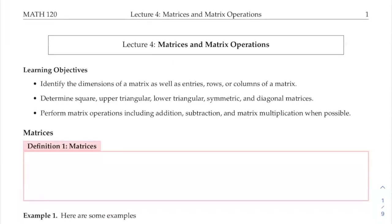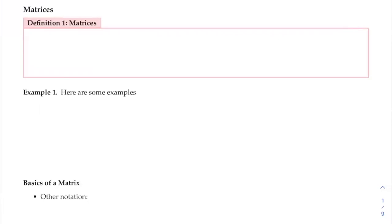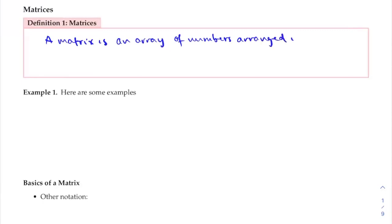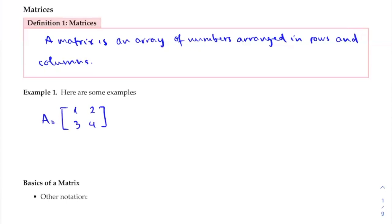First, let's write down the definitions of a matrix. You saw these definitions when we talked about forming the augmented matrix in lecture two. A matrix is an array of numbers arranged in rows and columns. Usually we use capital letters to indicate matrices. For example, matrix A is of the form 1, 2, 3, 4 — a matrix of two rows and two columns.